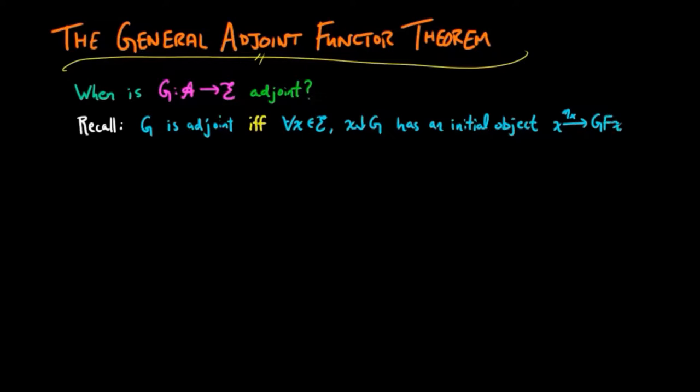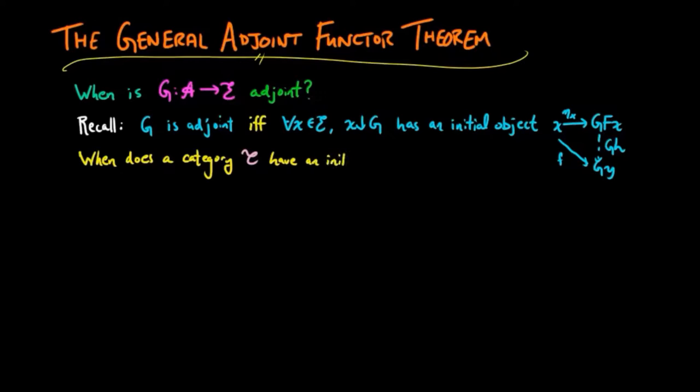That just means that given any other arrow X to GY, say, there exists a unique factorization through eta X. So we can then rephrase the question of when does a functor have an adjoint to when does a category C have an initial object? If we assume the further condition that the category C is complete, the solution has an easier answer.